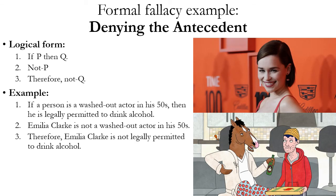A second type of formal fallacy is called denying the antecedent. Its logical form is: if P then Q; not P; therefore not Q. It's similar to modus tollens, but in modus tollens you deny the consequent — if P then Q; not Q; therefore not P — and that is valid. But if you deny the antecedent instead, it becomes invalid. For example: if a person is a washed-out actor in his 50s, then he is legally permitted to drink alcohol; Emilia Clarke is not a washed-out actor in his 50s; therefore Emilia Clarke is not legally permitted to drink alcohol. The premises are true but the conclusion is false, proving the argument form invalid.